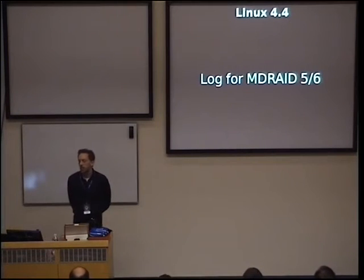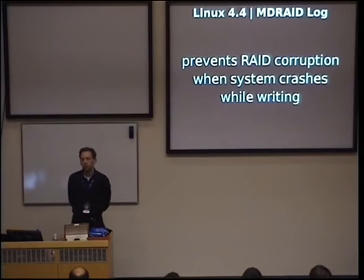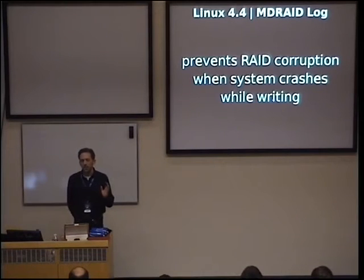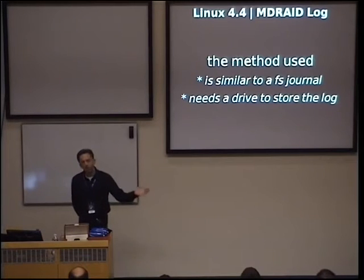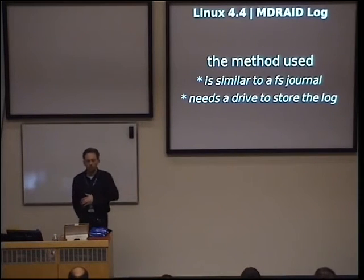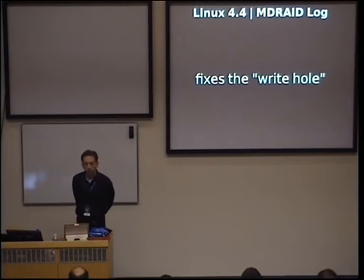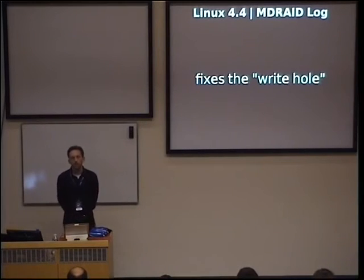For the sysadmins, Linux 4.4 brought locked support for MD RAID 5 and 6. That's something you can use to prevent RAID corruption when the system crashes while writing a new stripe. It's similar to what's used in file systems — you write a journal of what you're planning to write, then actually write it. If the system crashes in between, you can replay the transaction from the log. You do need a separate drive for that, so even more drives for your big RAID setup, but if you care about data integrity it's important.